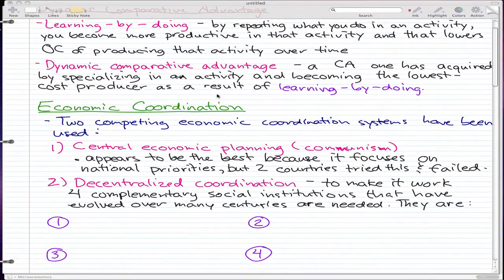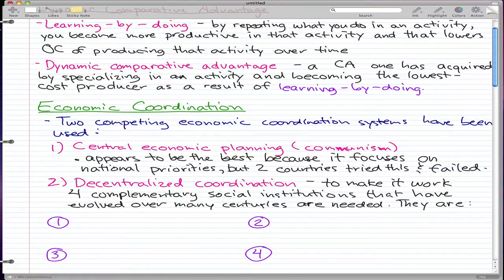Now, we're on to economic coordination. There are two competing economic coordination systems. Central economic planning, which is communism, appears to be the best because it focuses on national priorities, but two countries have already tried it and failed. I think the Soviet Union was one of them, but I don't remember the other.